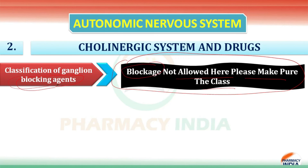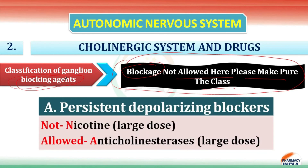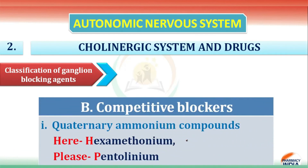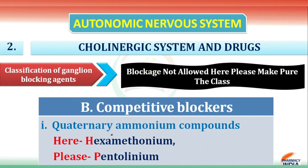The first class of ganglionic blocking agents is persistent depolarizing blockers. 'Not' indicates nicotine in large doses, and 'allowed' indicates anticholinesterase — also required in large doses.